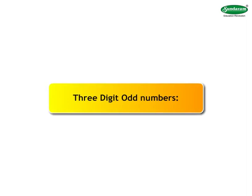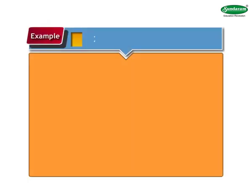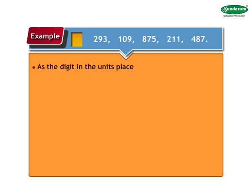Now let us see three-digit odd numbers. Again, you only have to check the units place of the given number. If the units place of a given three-digit number contains 1, 3, 5, 7, or 9, then it is an odd number. Let us see some odd three-digit numbers: for example, 293, 109, 875, 211, and 287. As the digit in the units place of 293 is 3, two hundred and ninety-three is an odd number.